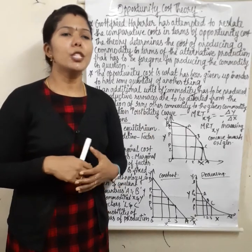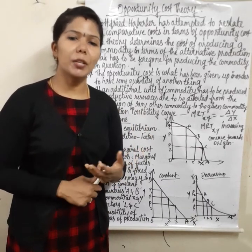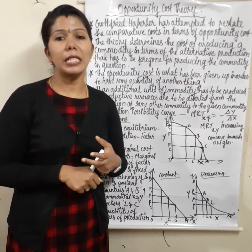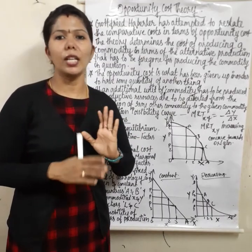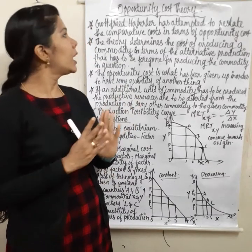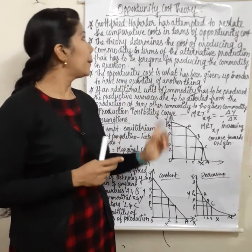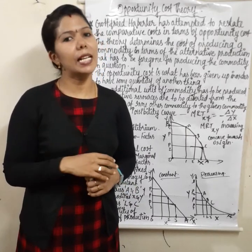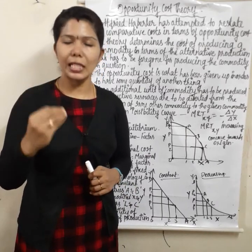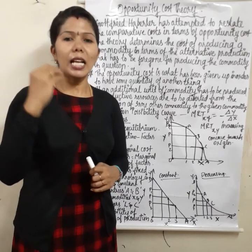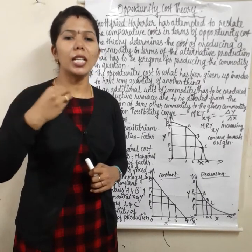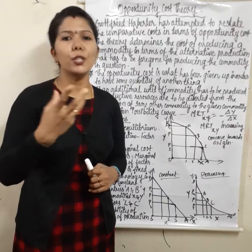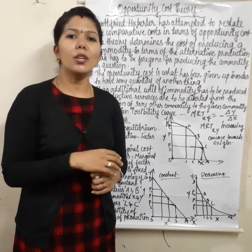The production possibility curve is also called the transformation curve or production possibility frontier. It is related to Godfrey Haberler's theory. Comparative cost is defined and restated in terms of opportunity cost.